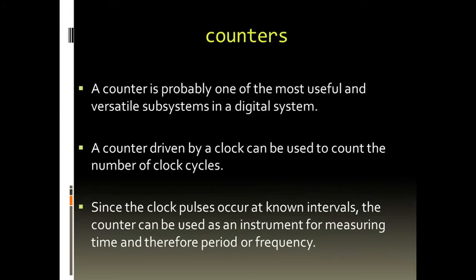Clock pulses occur at regular intervals of time, meaning they have a timing cycle. So by counting the number of clock pulses, you can count the time, period, or frequency. Since the clock pulses occur at a known interval, the counter can be used as an instrument for measuring time and therefore period or frequency.